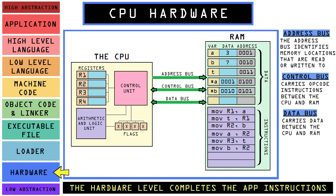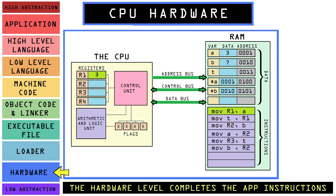Let's do an example of swapping two variables by value instead of by pointers. We begin by moving the contents of variable A into the R1 register, then move the value of R1 into the address of variable T. This took two steps because we cannot directly move RAM memory to RAM memory — the physical hardware cannot do that, which is why in assembly language we could not move memory to memory. Next we move variable B into R2, then R2 into variable A. We follow this by moving variable T into R3 and then R3 back into B, completing our swap.